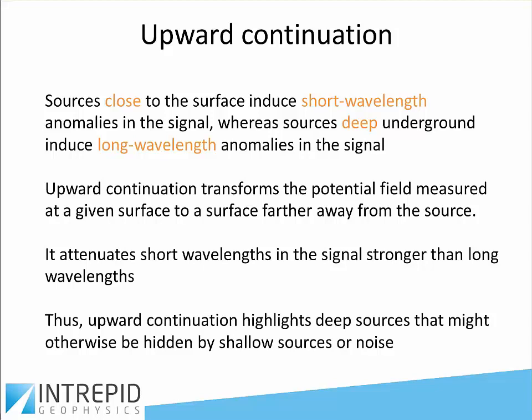One of the most important aspects of the technology that has evolved is to upward continue the measured field a series of times. Sources close to the surface generally show up in potential fields as short wavelength anomalies, whereas sources buried deep underground tend to have long wavelength features. The upward continuation transforms the measured signal as though it had been measured far above the surface of the Earth, attenuating short wavelengths more strongly than long wavelengths. Thus, upward continuation highlights deeper sources that might otherwise be hidden by shallower sources.